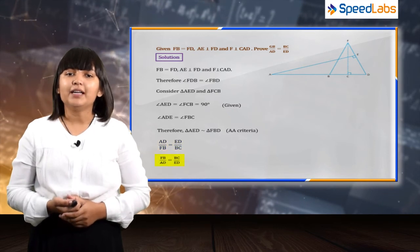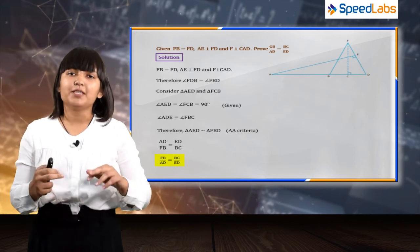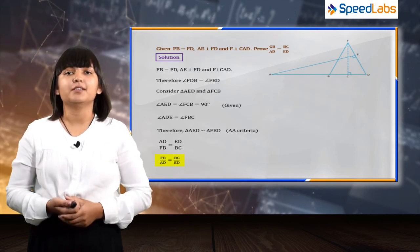So we can say that AD upon FB is equal to ED upon BC. On reciprocating this equation, we will get the desired result.